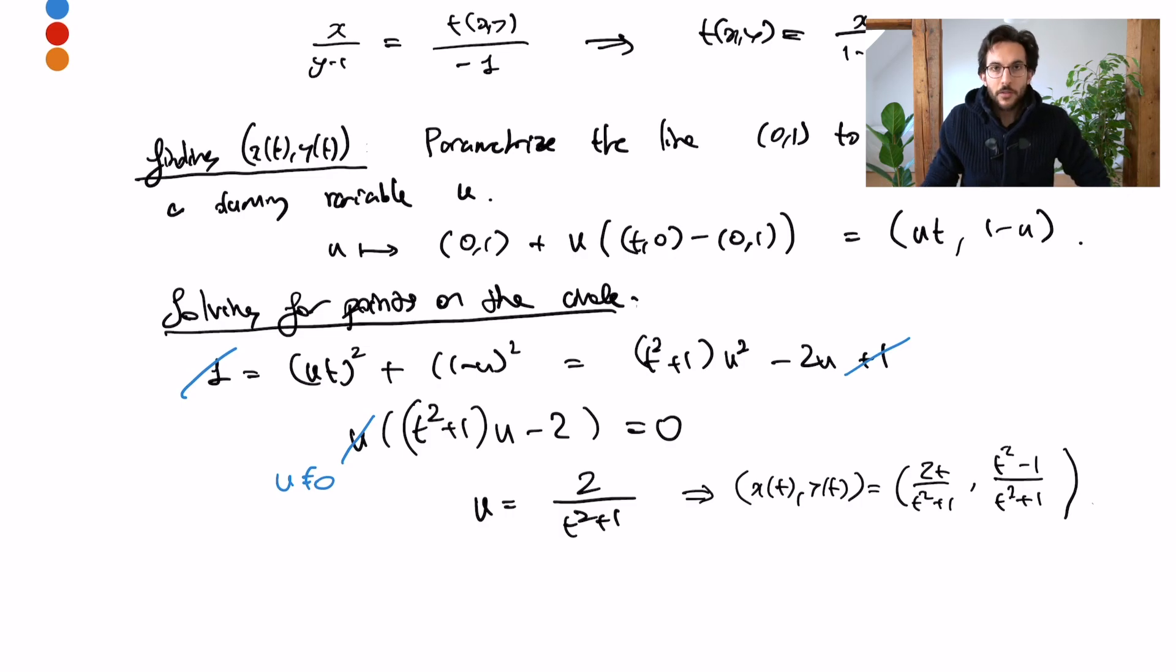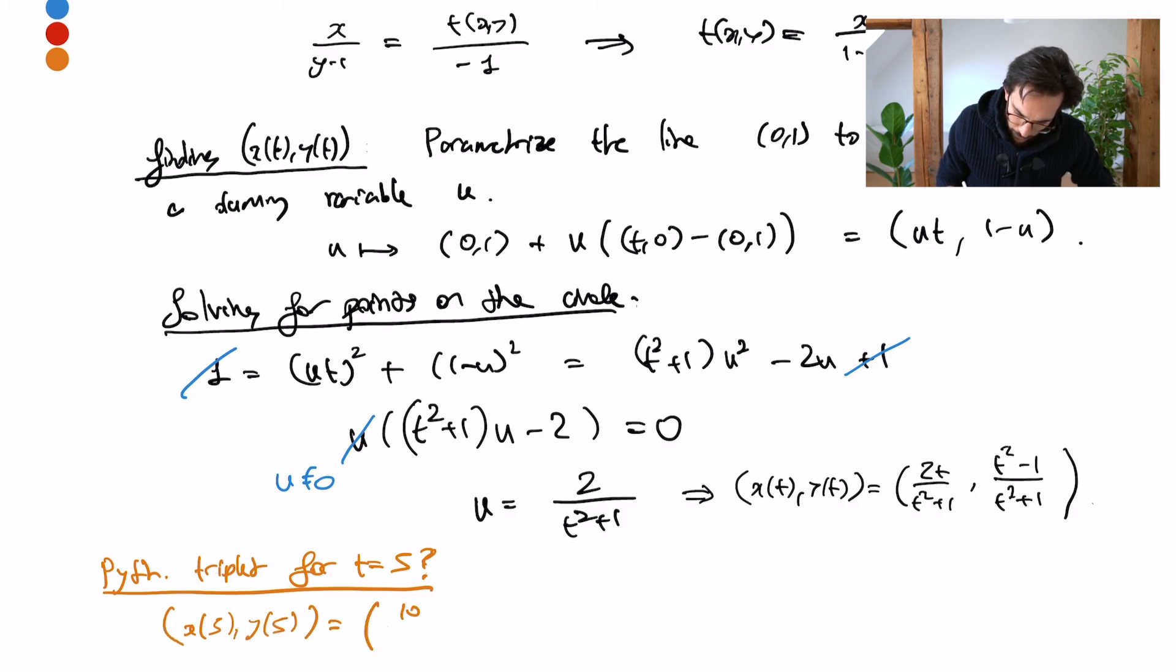And let's benefit from our labors a little bit and remember that this was a way to parameterize Pythagorean triplets which means that for any t that I plug in I'm going to get integers a, b, c that are the integer lengths of a right-angled triangle. Let's say I want to know which Pythagorean triplet corresponds to t equals 5 and then just plugging this in I see that I get 10 over 26 and 24 over 26 which is 5 over 13 and 12 over 13 that gives me the Pythagorean triplet 5, 12, 13.